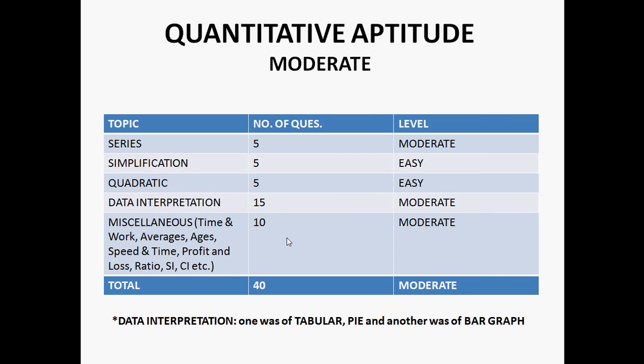Now, let's discuss quant. There were 5 questions from series, 5 from simplification, and 5 from quadratic. Series was of moderate level, simplification was easy level, and quadratic was also easy level. There were 15 questions from data interpretation, which was of moderate level, and 3 types of DI were asked: one was tabular, another was pie graph, and third one was bar graph. There were 10 questions from miscellaneous, which was of moderate level.